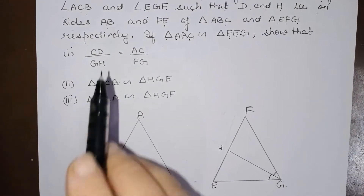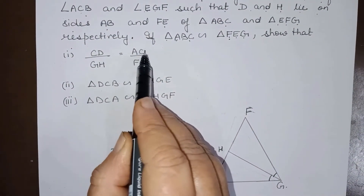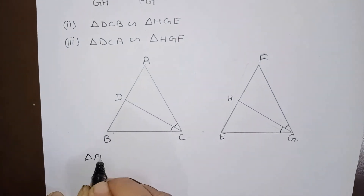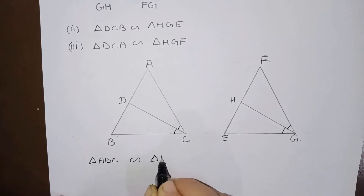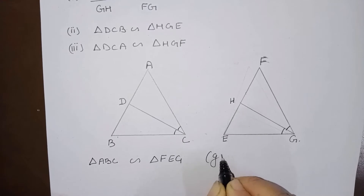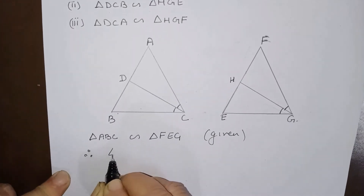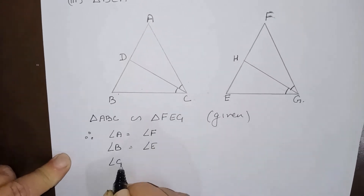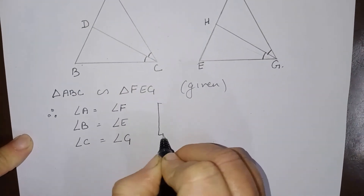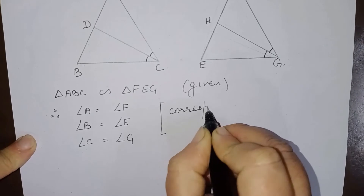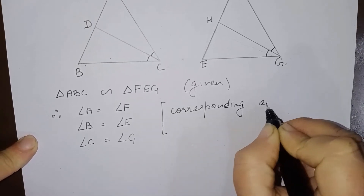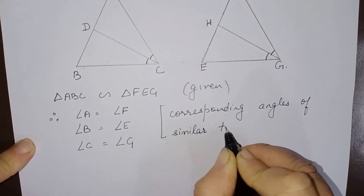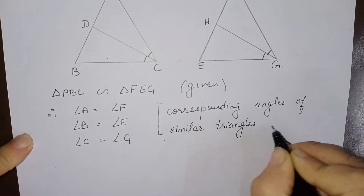First, we have to show that CD over GH equals AC over FG. Since triangle ABC is similar to triangle FEG, we have angle A equals angle F, angle B equals angle E, and angle C equals angle G — corresponding angles of similar triangles are equal.